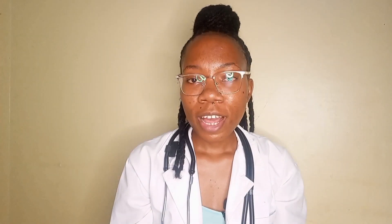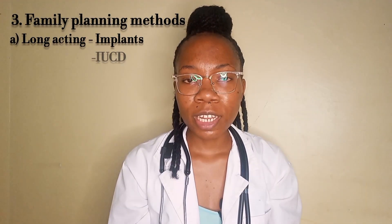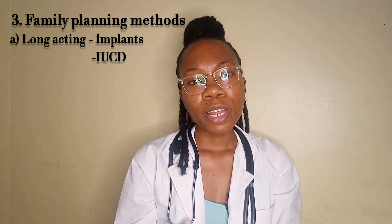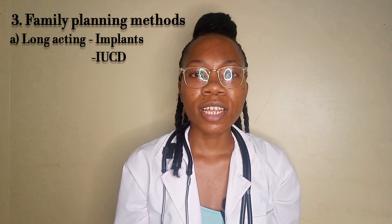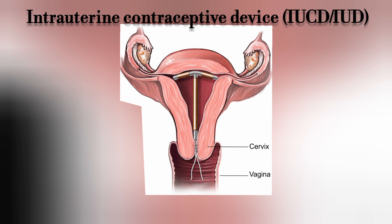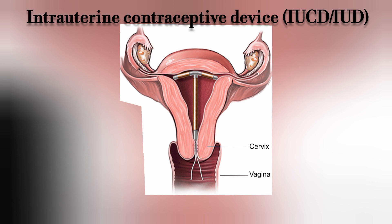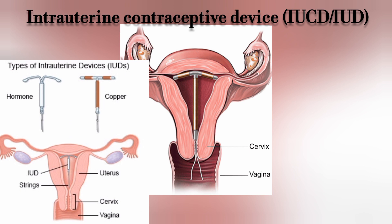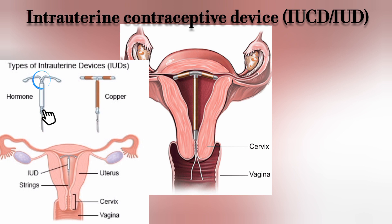We also have the intrauterine contraceptive device, or IUCD, which is a long-acting method. You can get one for three years, five years, or ten years — it's your choice. The IUCD comes in two different types. One has a perfect T-shape with metallic rings made of copper on all sides — this is the copper IUCD, which has fewer side effects compared to the hormonal one. The other type, which is slightly bent at the top, is the hormonal intrauterine device.